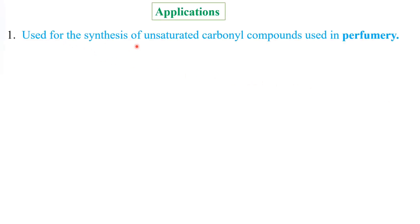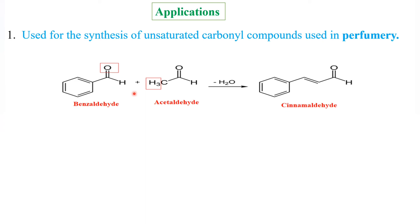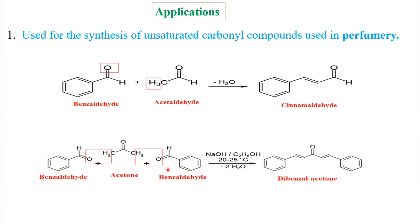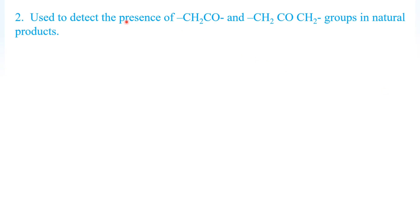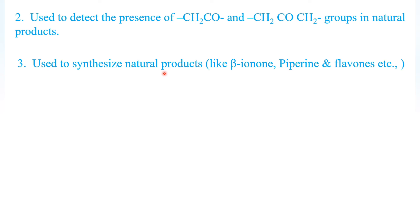Now we will see the applications of this reaction. First, it is used for the synthesis of unsaturated carbonyl compounds used in the perfume industry — for example, cinnamaldehyde from benzaldehyde and acetaldehyde, and dibenzylideneacetone from two molecules of benzaldehyde and acetone. Second, it is used to detect the presence of CH₂CO and CH₂ groups in natural products. Third, it is used to synthesize natural products like beta-ionone, piperine, flavones, etc.